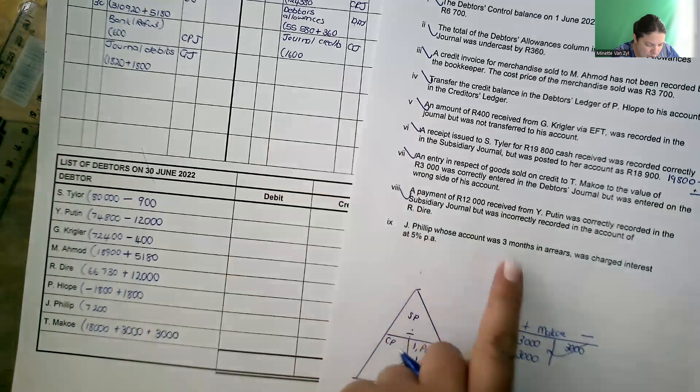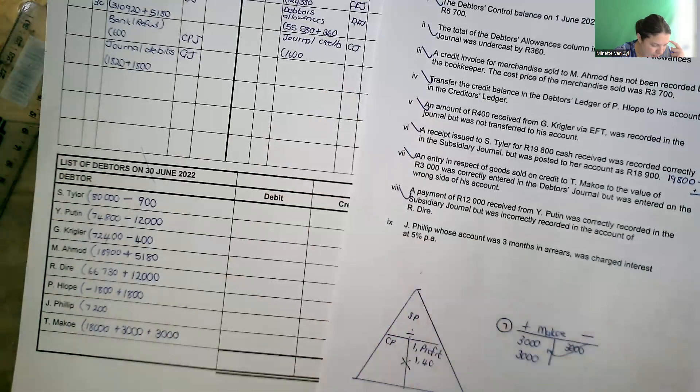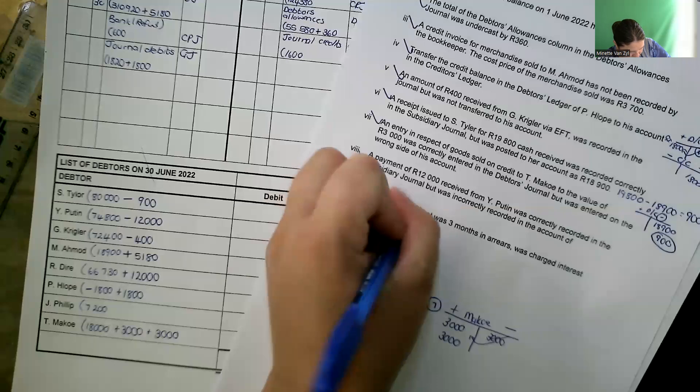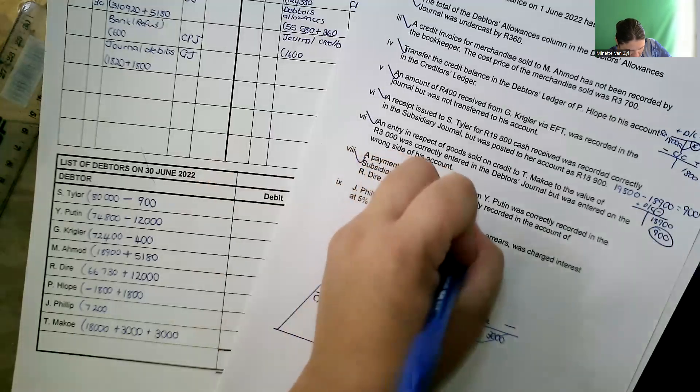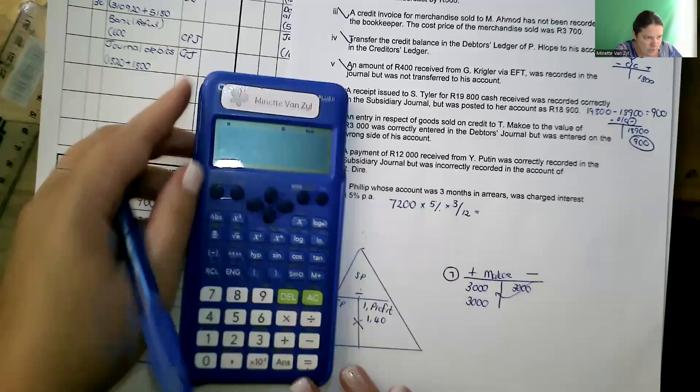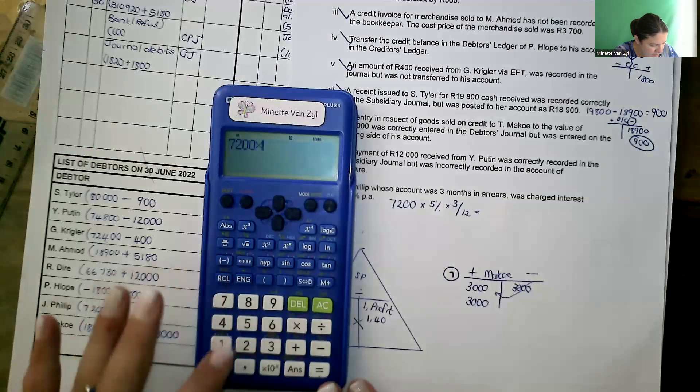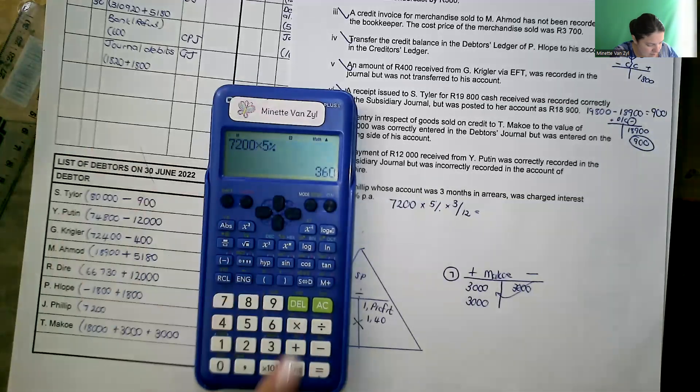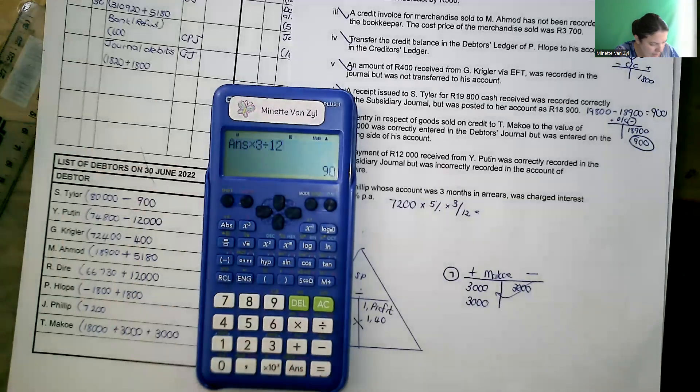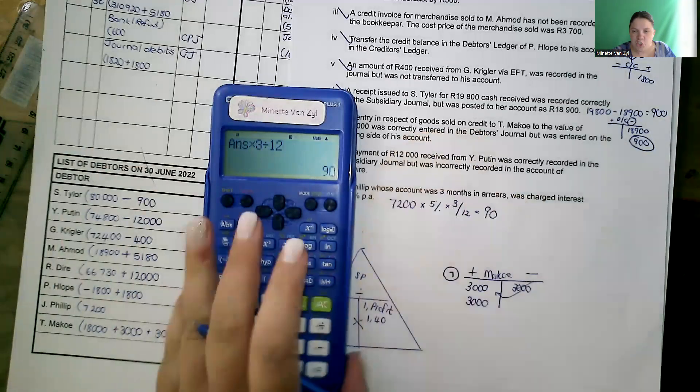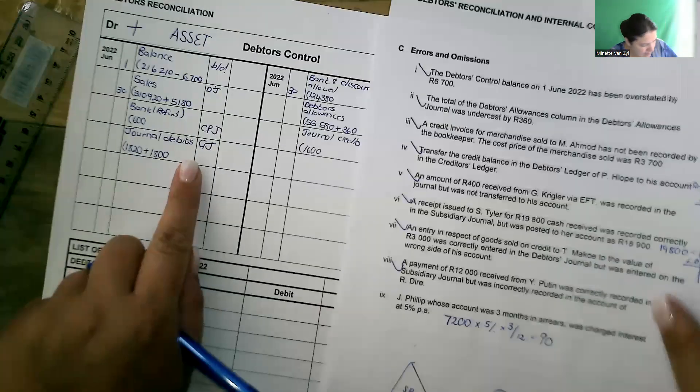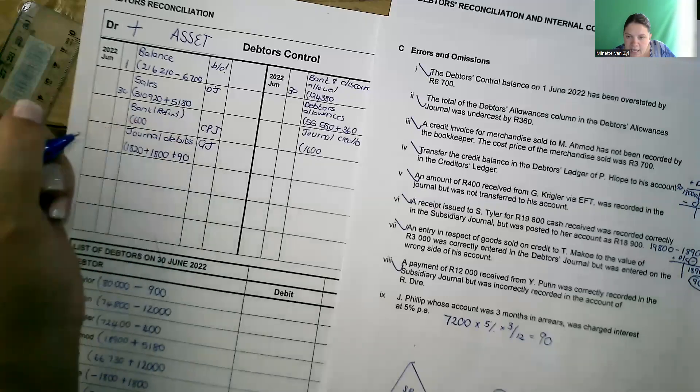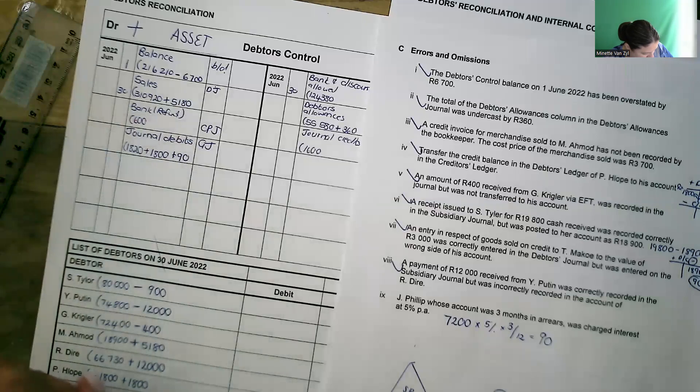Last one. Jay Phillip, whose account was three months in arrears, was charged interest at 5%. So let's see what he owed us. Jay Phillip owed us 7,200 times 5% times 3 over 12. That's the calculation for interest. So it's 7,200 times 5% times 3 divided by 12. 90 Rand. So we're going to charge him 90 Rand interest. And interest is shown in your general journal on the debit side. We're going to add 90 Rand. And I will add 90 Rand to the account of Jay Phillip plus 90 Rand.